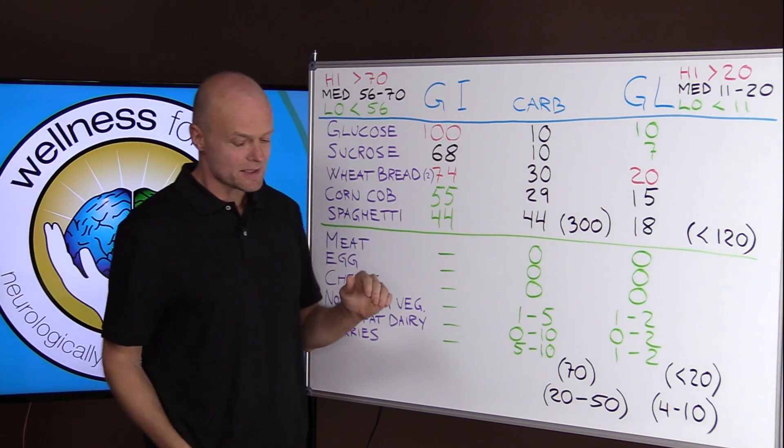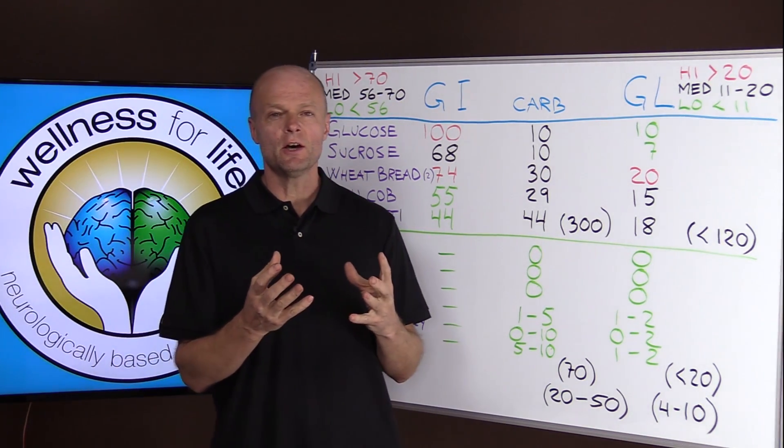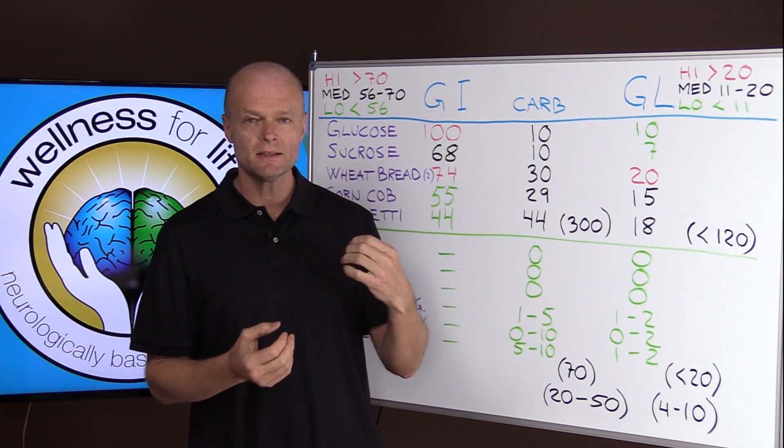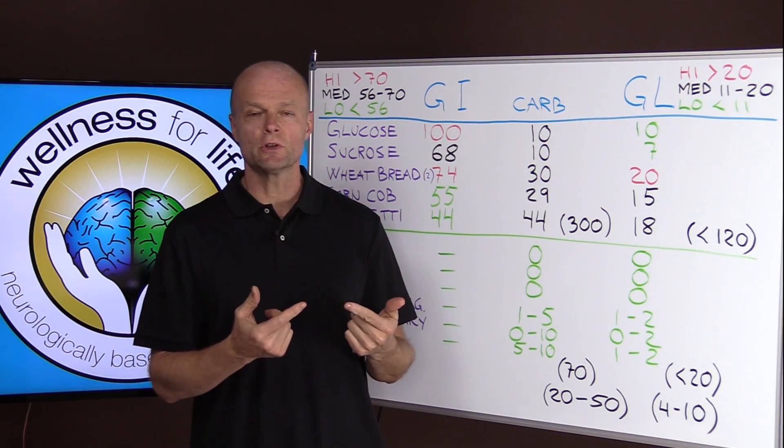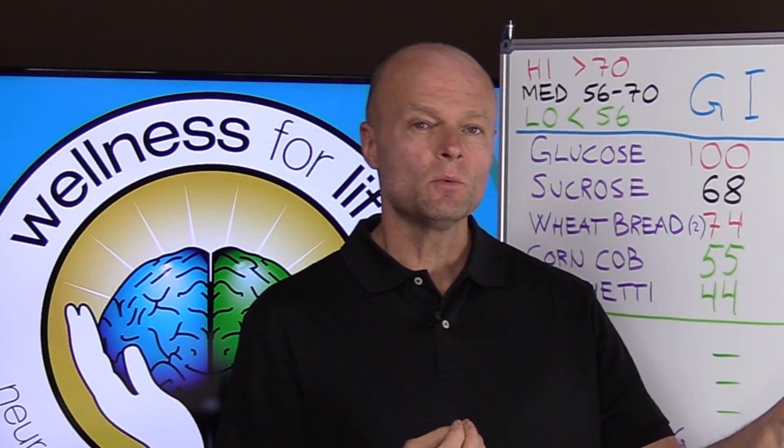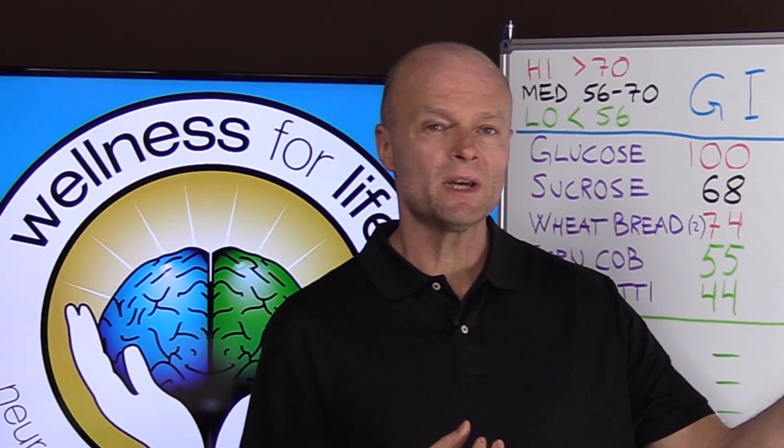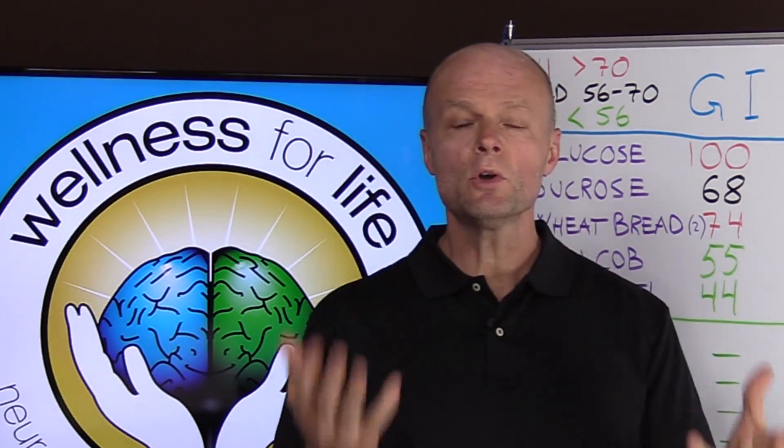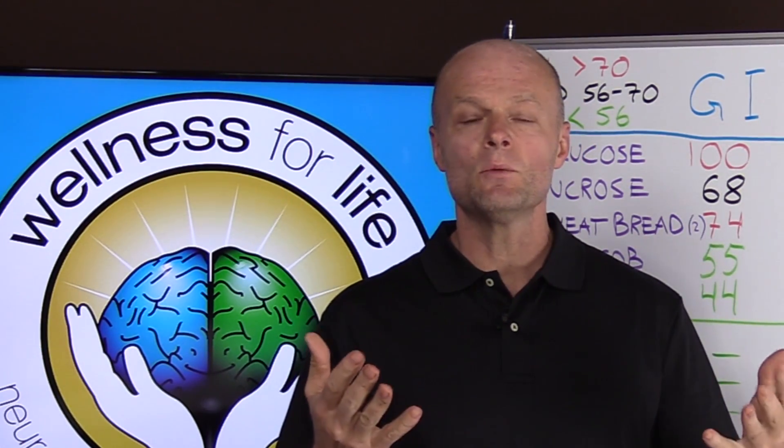Glycemic index is a measurement of how quickly something that you eat gets digested and turned into blood sugar. Glycemic means sugar. So if you eat something with a lot of sugar that's readily accessible, it's going to get into your bloodstream faster and have a higher glycemic index. If you eat something with no carbohydrates, then it will raise your glycemic index very slightly or not at all.